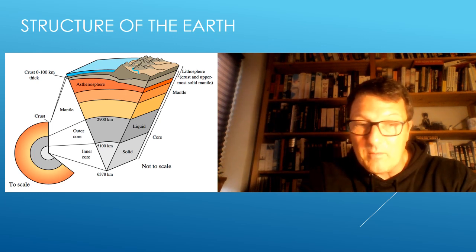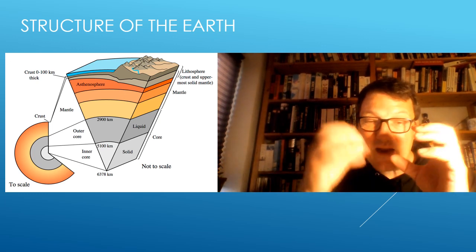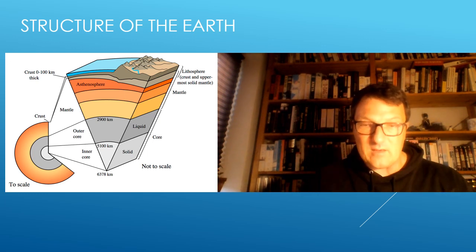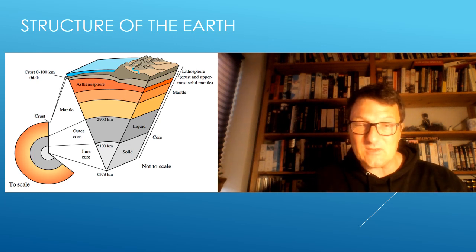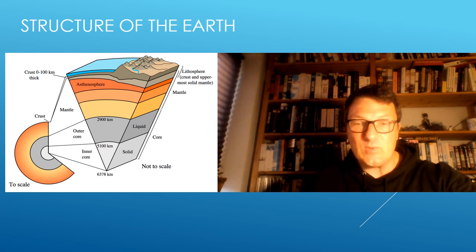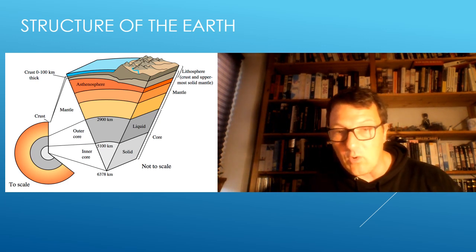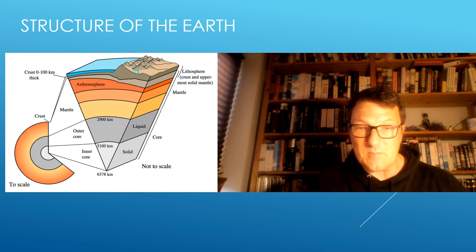Beneath the crust we have the mantle, which is made of very thick molten rock. We call it magma. It has a viscous mass, so it's not like water, it's more like porridge. As we get closer in, we have the inner and outer core. The outer core is made of molten iron, and the inner core is made of solid iron.